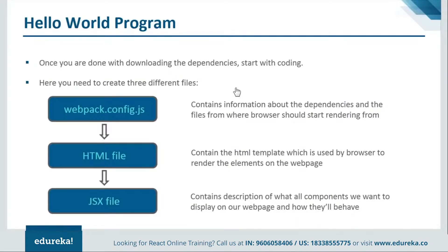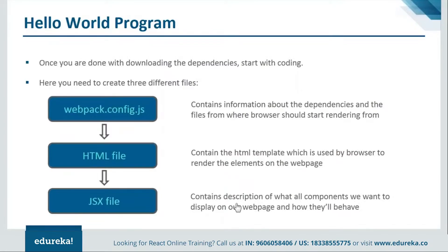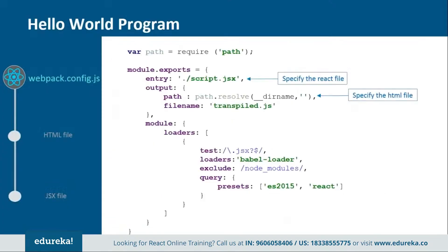To create our program we'll be creating three files. One is webpack.config.js, one is an HTML file, and the last one is a JSX file. The webpack.config.js is a configuration file containing information about the dependencies and the files from which the browser should start rendering. The HTML file contains the HTML template used by the browser to render elements on the web page. The JSX file contains a description of all the elements we want to display.